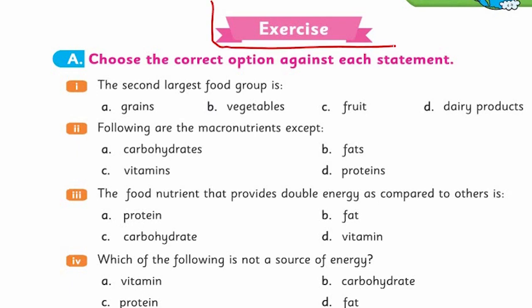Coming here, choose the correct option against each statement. All right. The second largest food group. I have heard about grains, vegetables, fruits, dairy products. You check that.